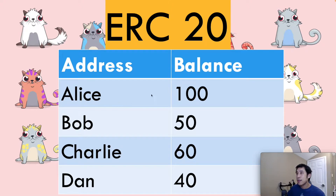In this case, Alice has 100 tokens, Bob has 50 tokens, and Charlie has 60 tokens. All these tokens are identical to one another.